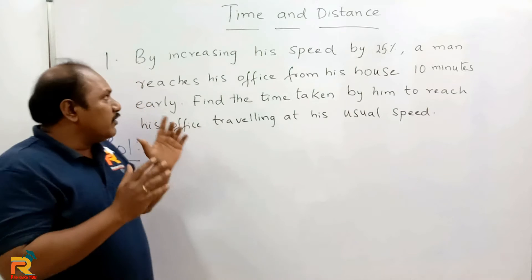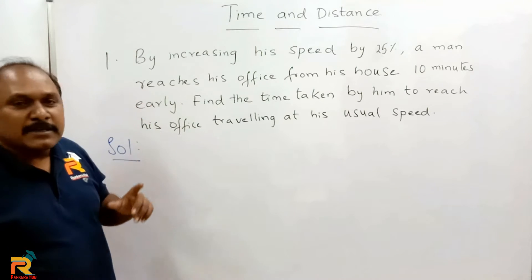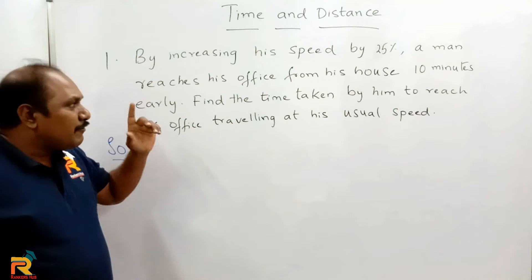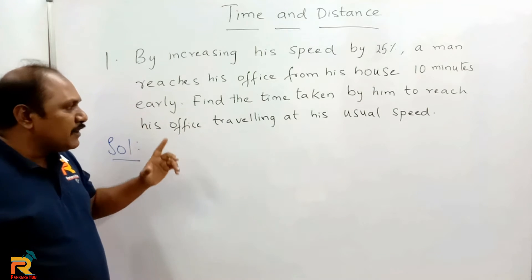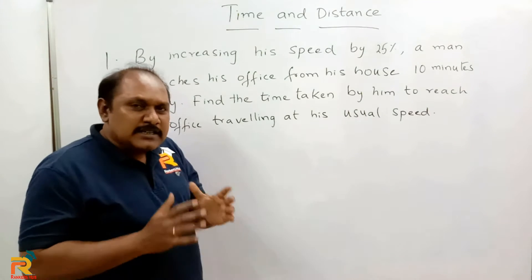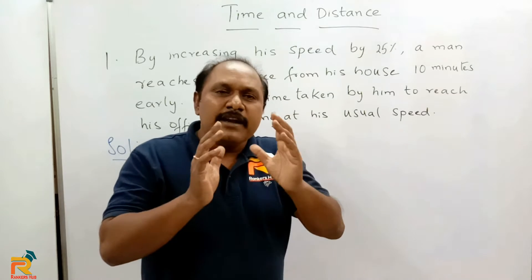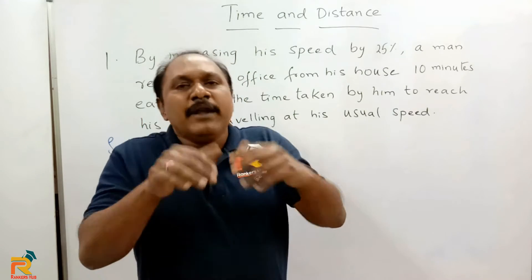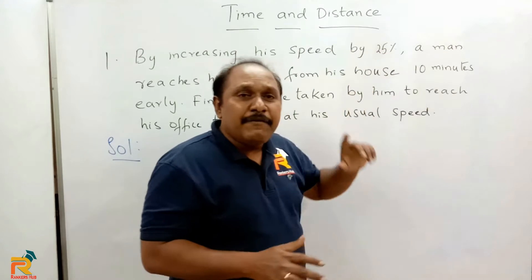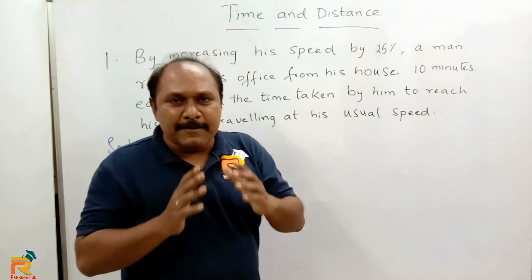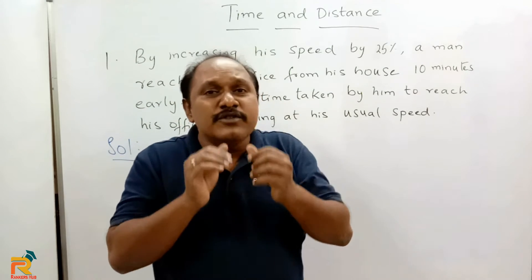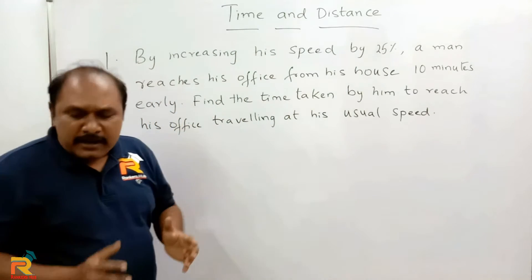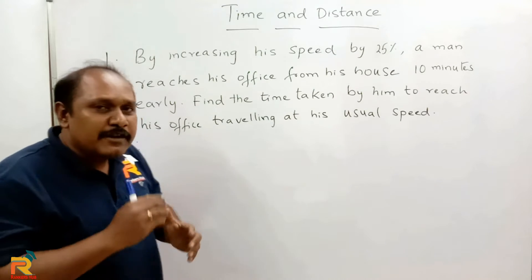The first question says: by increasing his speed by 25%, a man reaches his office from his house 10 minutes early. Find the time taken by him to reach his office at his usual speed. So a man travels to his office at a regular speed, and one day he increased his speed by 25%, reaching his office 10 minutes early. What is his usual travel time? What is constant here? The distance is constant.